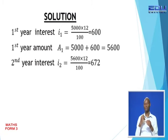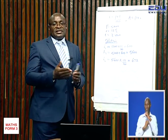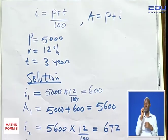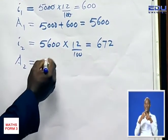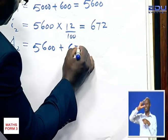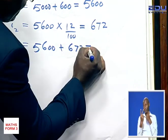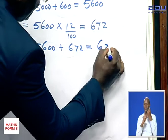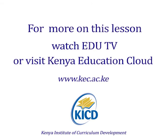Now that we have the interest for the second year, we can calculate the amount at the end of the second year. Amount is principal plus interest, so 5,600 plus 672 gives us an amount of 6,272.